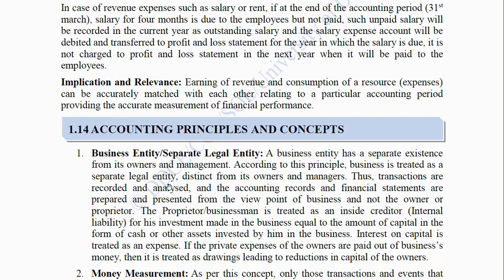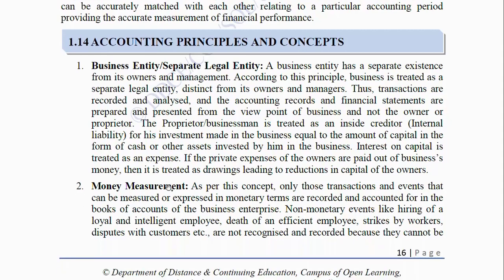Accounting Principles and Concepts: First, Business Entity or Separate Legal Entity Concept: A business entity has a separate existence from its owners and management. According to this principle, business is treated as a separate legal entity distinct from its owners and managers. Thus, transactions are recorded and analyzed, and accounting records and financial statements are prepared from the viewpoint of the business and not the owner or proprietor. The proprietor is treated as an inside creditor (internal liability) for his investment made in the business, equal to the amount of capital invested. If the private expenses of the owner are paid out of business money, it is treated as drawings, leading to reductions in the capital of the owner.